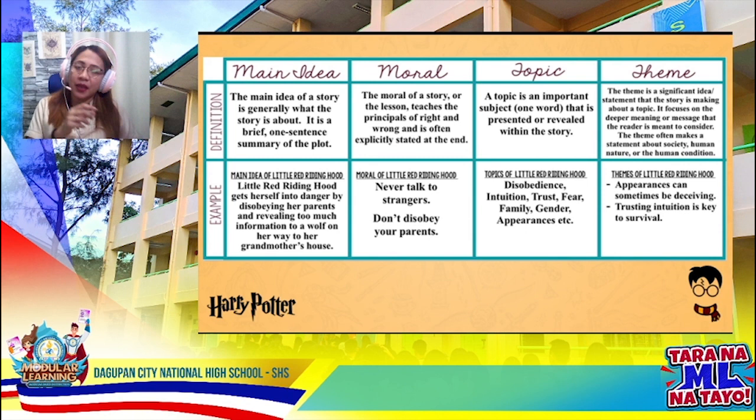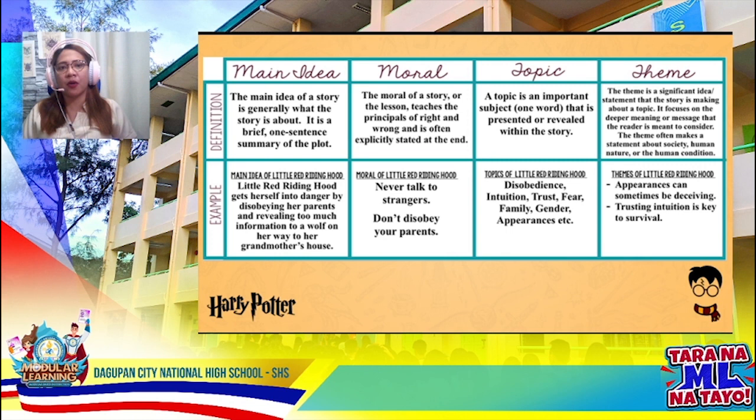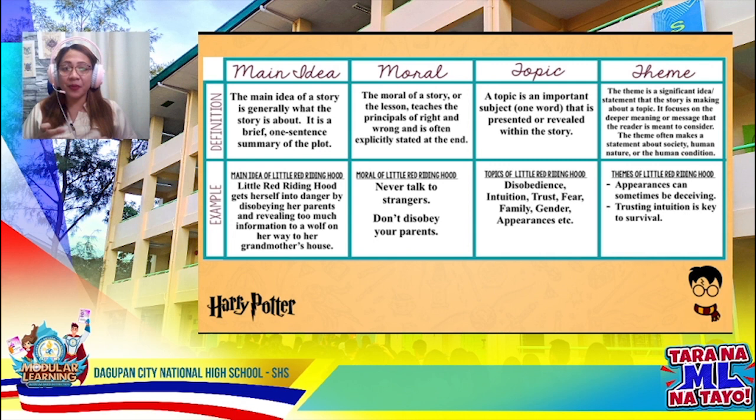Don't confuse yourself with these terms: main idea, morals, topic, and theme. To make a long story short — when you say main idea, it's a one-sentence summary of the story. Moral is what you learned after you read. Topic is a one-word summary of the story. And when we say theme, it is the most significant statement that the story is trying to make about the topic.